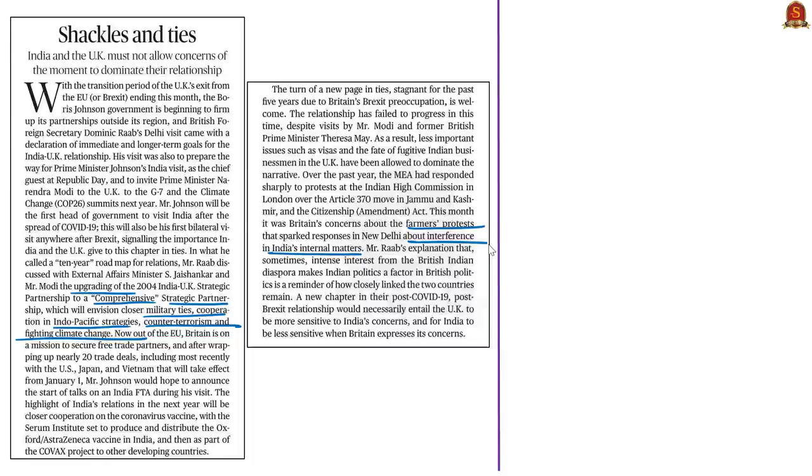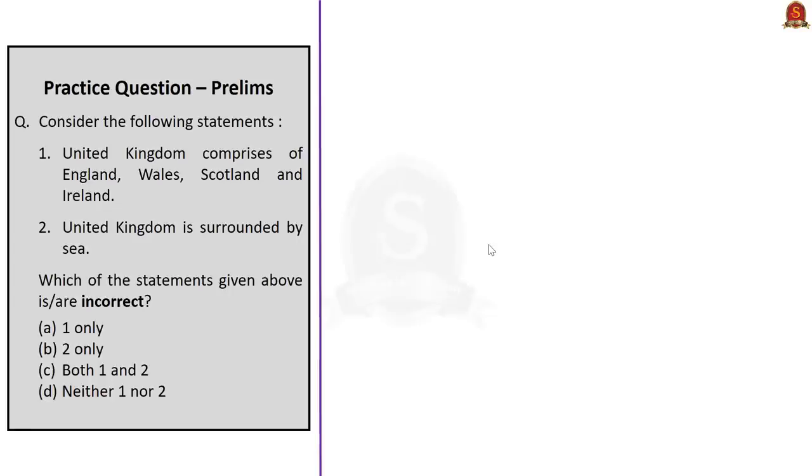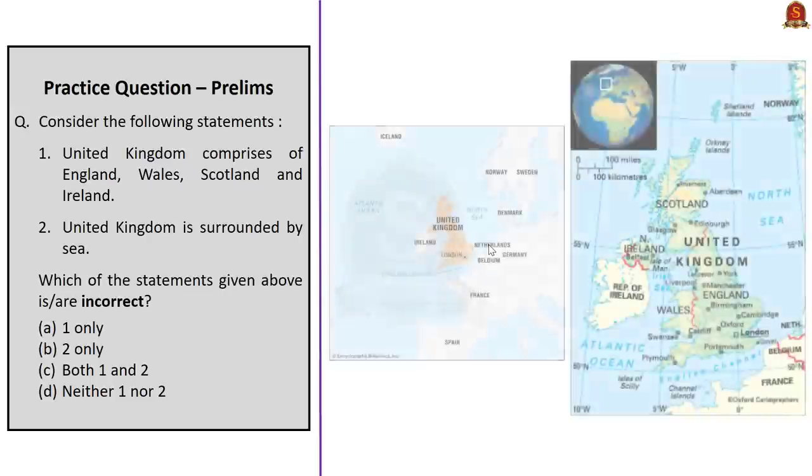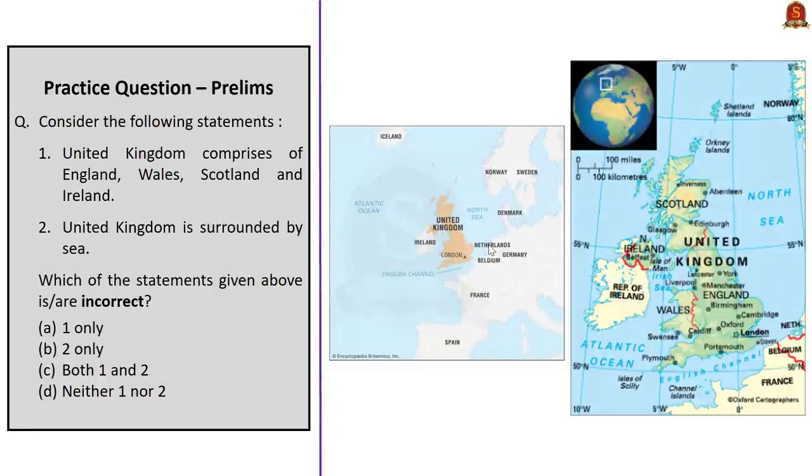With this information, let us have a look at this question. Consider the following statements. The first statement reads, United Kingdom comprises of England, Wales, Scotland and Ireland. This statement is incorrect because the United Kingdom comprises of Great Britain and Northern Ireland, not whole Ireland. Here, Great Britain includes England, Wales and Scotland. The second statement reads, United Kingdom is surrounded by sea. This statement is also incorrect. Even though it seems like UK is surrounded by sea, it is not so because the Northern Ireland of UK shares land border with Irish Republic or Ireland. Here, both the statements are incorrect. So, the correct answer is option C, both one and two. With this, we have discussed all the relevant news articles from today's The Hindu newspaper.